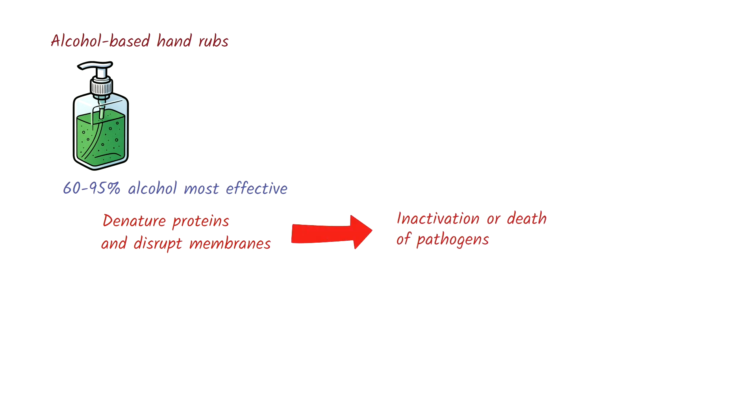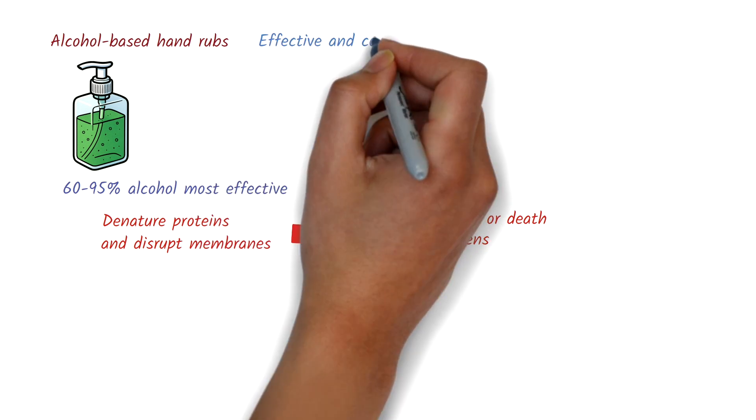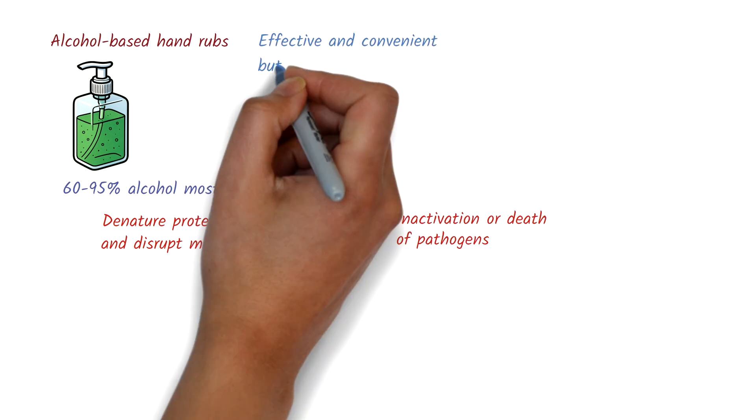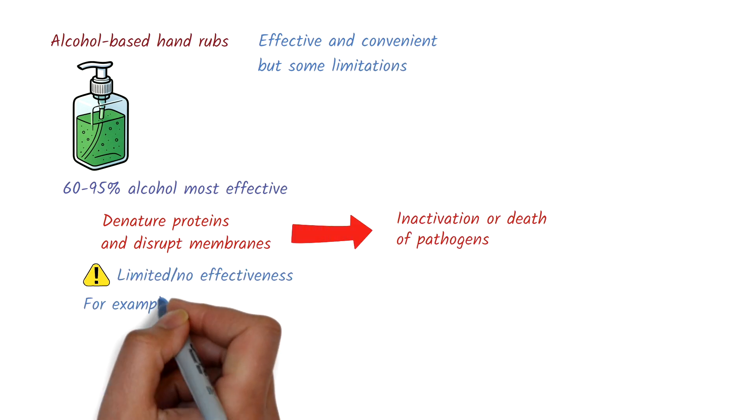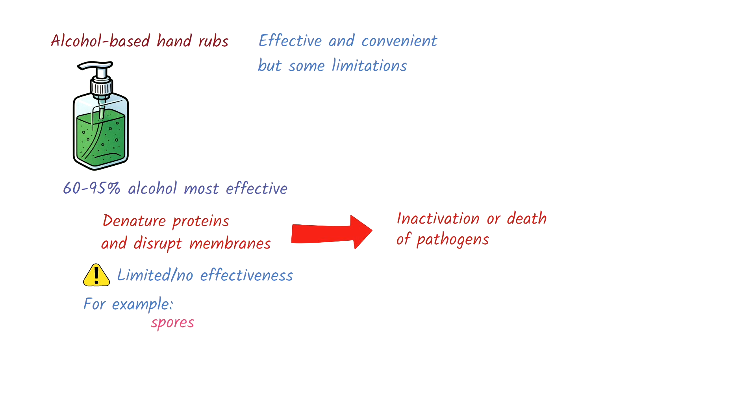Although alcohol-based hand rubs are highly effective and convenient for routine hand hygiene, they have some limitations. They have limited or no effect on some pathogens, for example, bacterial spores such as Clostridium difficile, protozoan oocysts such as those of Cryptosporidium, and some non-enveloped viruses such as Norovirus.